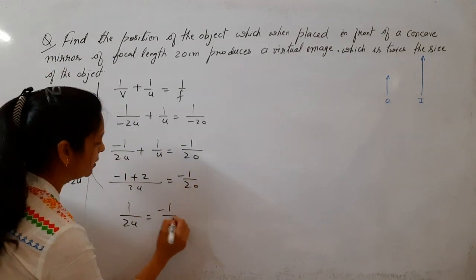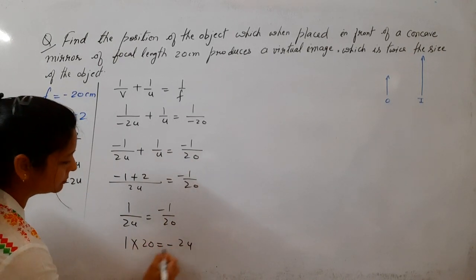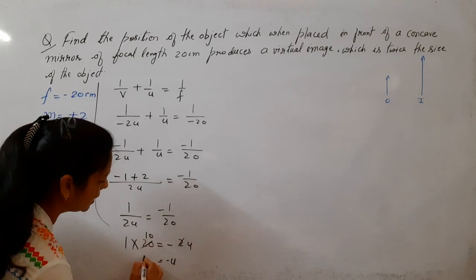Isko further solve karenge. Cross multiply. 2u minus 20, so minus u aa gaya 10 cm.